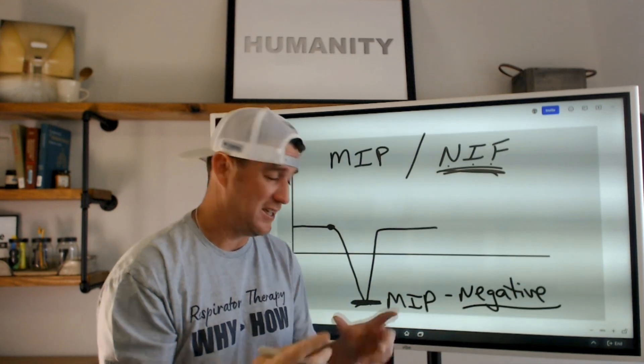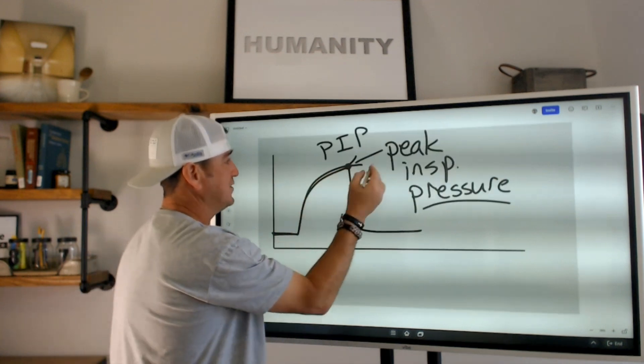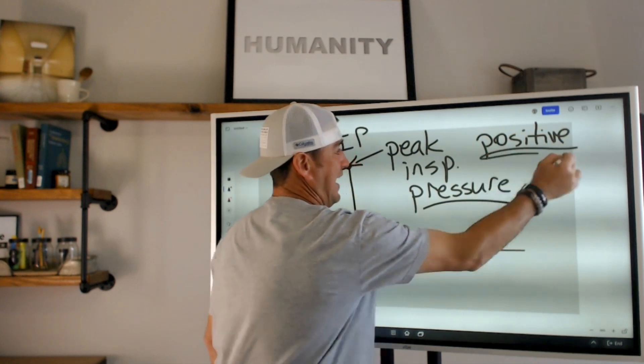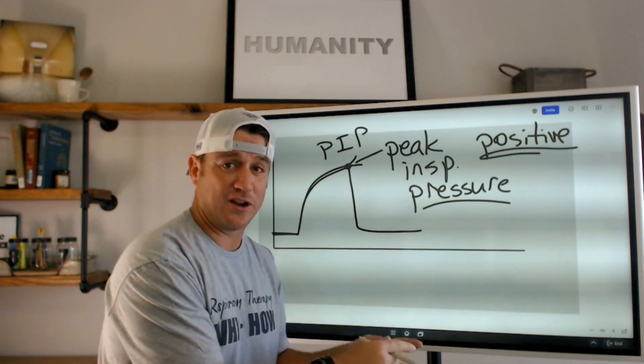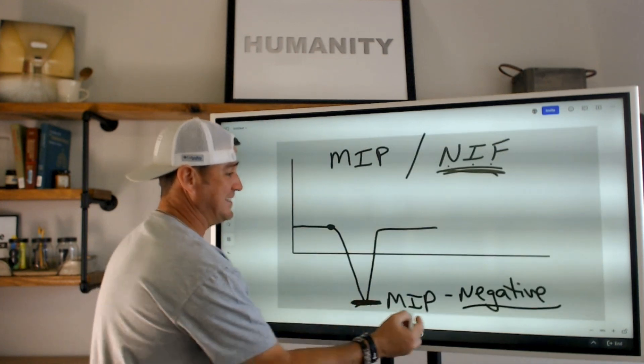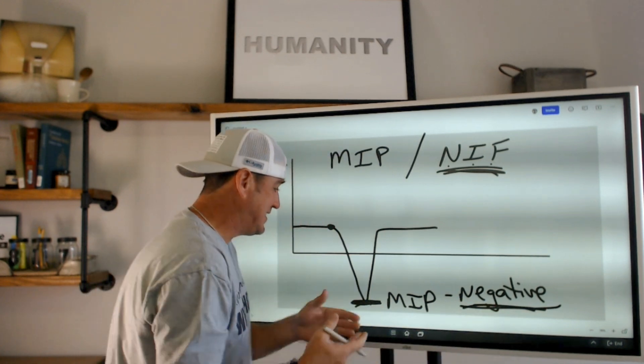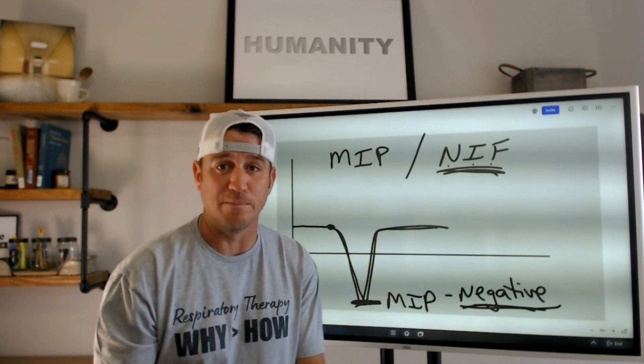You see what this is, is this is your MIP. You see MIP and NIF is a negative value. So two different things. Go back and look at it. PIP is a positive value. This is positive. And it happens during the inspiratory phase of a mechanical breath or a positive pressure breath, should I say. MIP is negative and we do it intentionally to assess the patient's strength of their respiratory muscles.